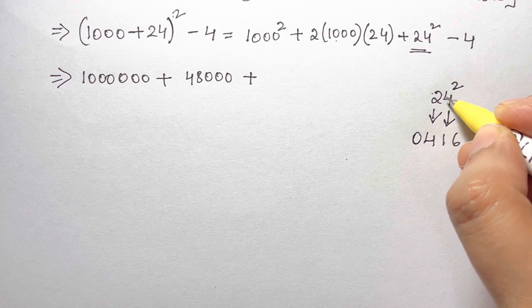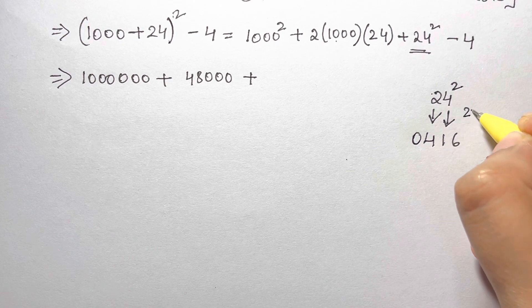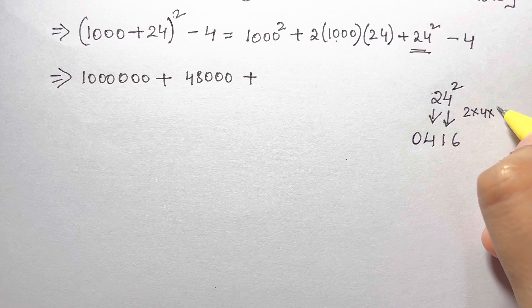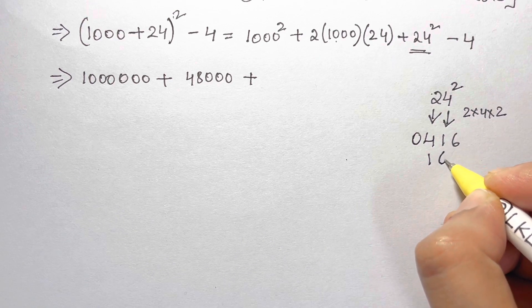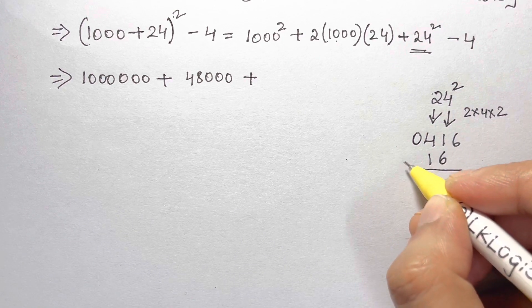Now just multiply all these numbers: 2 times 4 times 2, the exponent as well. So 2 times 4 is 8, times 2 is 16, and write it under this number, leaving one digit from the right.